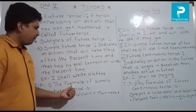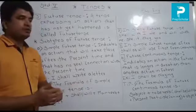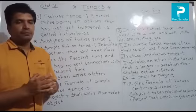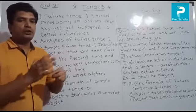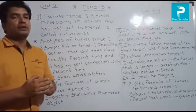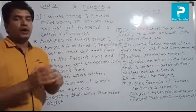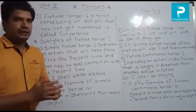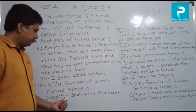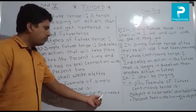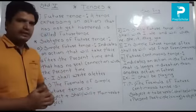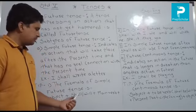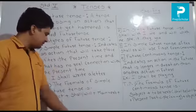There are some tips on simple future tense. Tip number one: the formula of simple future tense. Formula is very important in tenses. The formula of simple future tense is: Subject + shall/will + main verb + object.